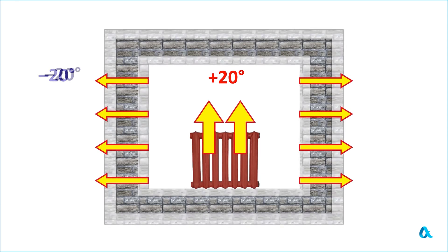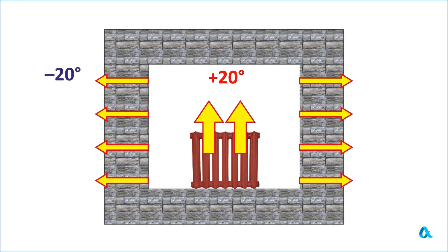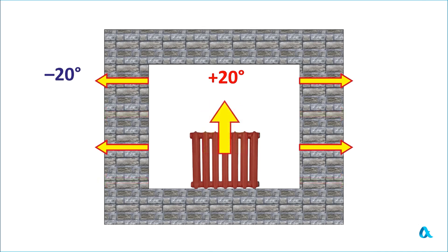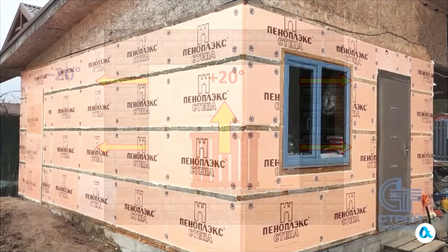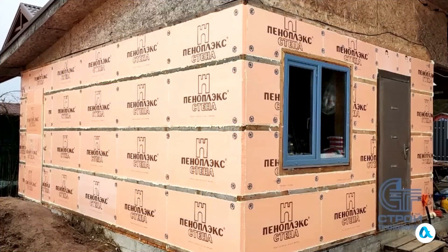If the walls of the house were twice as thick, the heat flow at the same temperature difference would be half as much, and the heat loss would be reduced by half. But of course, it's better not to excessively increase wall thickness, but to use insulation with low thermal conductivity.